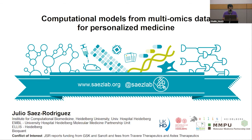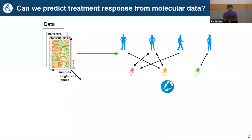We'll talk broadly about computational models that use large omics data in the context of human disease and personalized medicine. We are in the medical faculty and for openness I should say we also get funding from GSK and Sanofi, and I had fees from two small companies called Travere and Aztecs. With that out of the way, broadly speaking our group is interested in how we can use different types of omics data in the context of human disease.